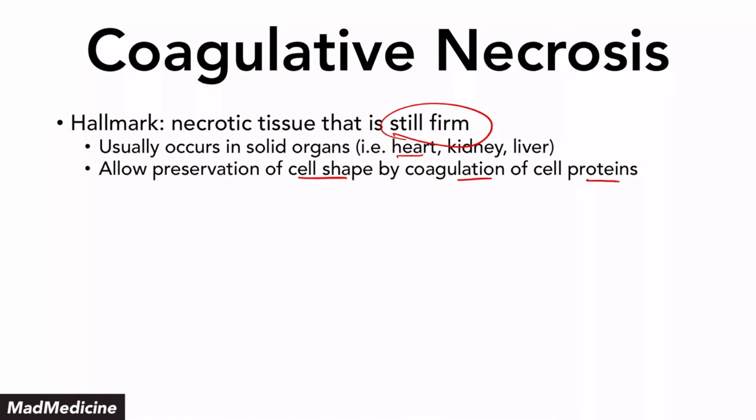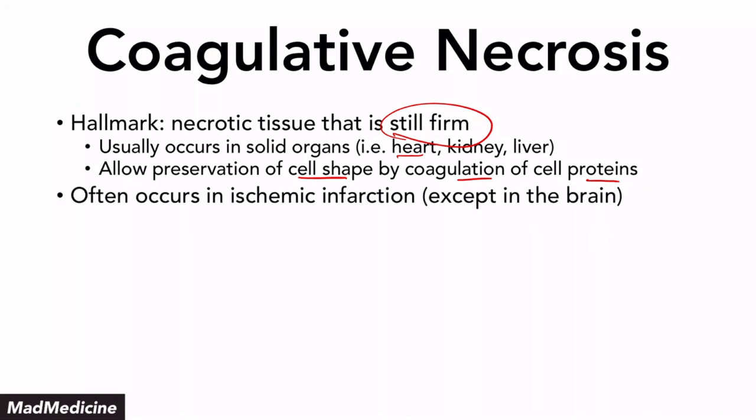If the cell shape is preserved, usually the organ shape is also going to be preserved. Often this is going to happen due to an ischemic infarction — not in the brain though; that's the exception, and we'll talk about what happens in the brain in a second. In these solid organs, you're going to see an ischemic infarction happening because usually a thrombus is going to form — the coagulation cascade gets activated, or it could be an embolus — and you're going to see necrosis happening in the tissue distal or downstream to the coagulation.